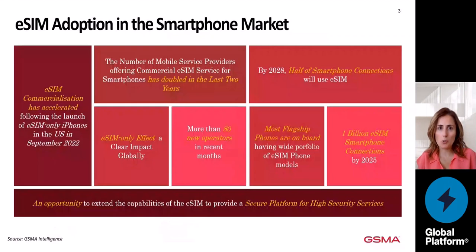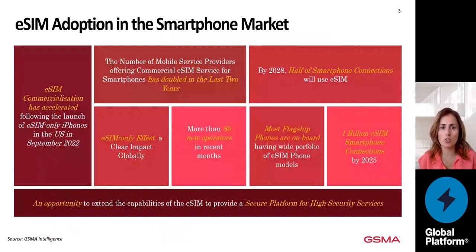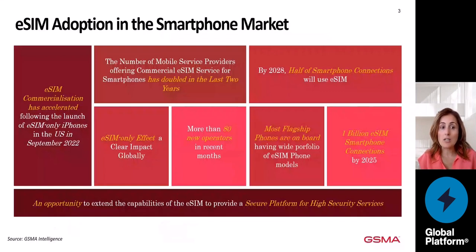Let's have a quick look at the ISIN adoption in the smartphone market. The number of operators offering commercial ISINs for smartphones has doubled in the last two years. More than 80 new operators have joined the ISIN technology in recent months. It's clear that ISIN commercialization has accelerated due to the announcement of the ISIN-only iPhones in the US in September 2022. One billion ISIN smartphone connections are expected by 2025, and by 2028, half of all smartphone connections will use ISIN. There is a clear opportunity to extend the ISIN capabilities to provide a secure platform for high-security services — and this is where SAM is taking place.